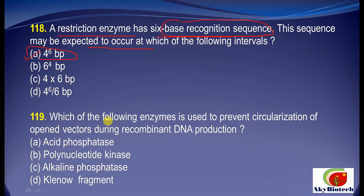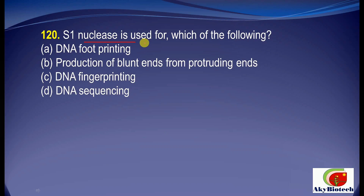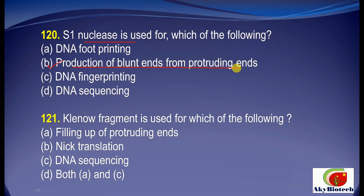Question 19: Which of the following enzymes is used to prevent circularization of open vectors during recombinant DNA production? The correct option is C — alkaline phosphatase. Question 20: S1 nuclease is used for which of the following? It is used for production of blunt ends from protruding ends. Question 21: Klenow fragment is used for which of the following? It is used for filling up of protruding ends as well as DNA sequencing.